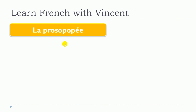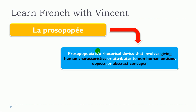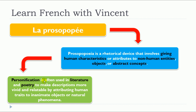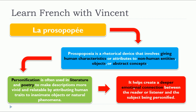This lesson is about la prosopopée. Prosopopée is a rhetorical device that involves giving human characteristics or attributes to non-human entities, objects or abstract concepts. Personification is often used in literature and poetry to make descriptions more vivid and relatable by attributing human traits to inanimate objects or natural phenomena. It helps create a deeper emotional connection between the reader or listener and the subject being personified.